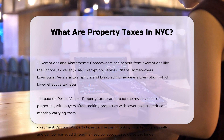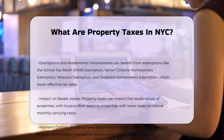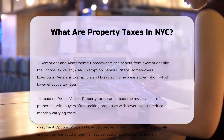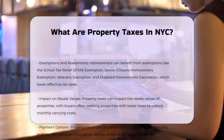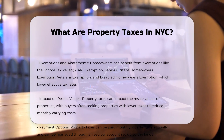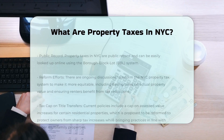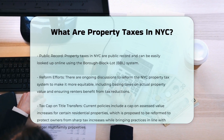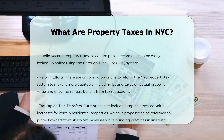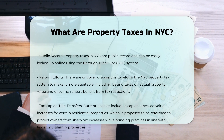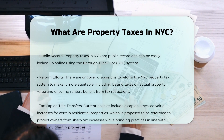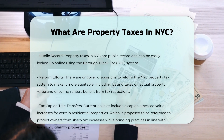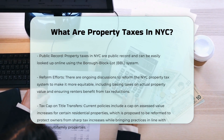Exemptions and Abatements: Homeowners in NYC can benefit from various exemptions and abatements, such as the School Tax Relief Star Exemption, the Senior Citizens Homeowners Exemption, the Veterans Exemption, and the Disabled Homeowners Exemption. These exemptions can significantly lower the effective tax rates for homeowners.